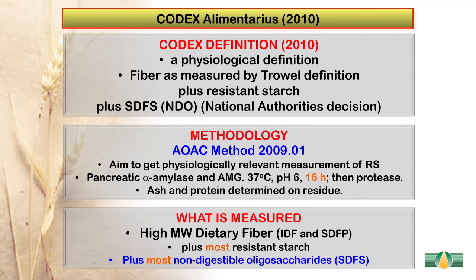In 2010, Codex Alimentarius released their definition of dietary fibre after deliberation for over 10 years. This definition is basically a physiological definition. It includes fibre as measured by the trial definition, plus resistant starch, plus non-digestible oligosaccharides, but this final decision on the oligosaccharides is left to national authorities.